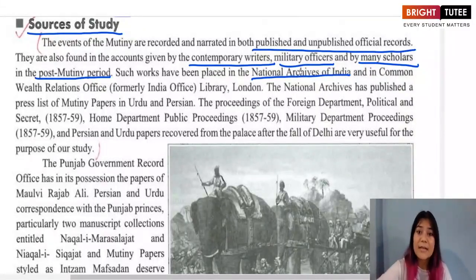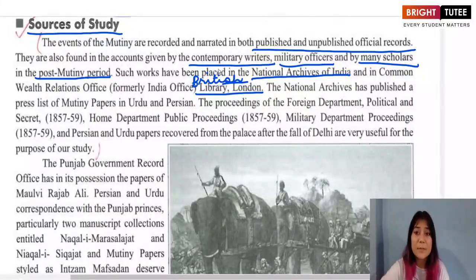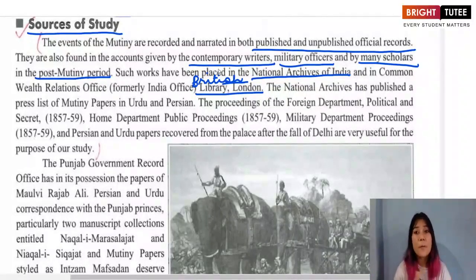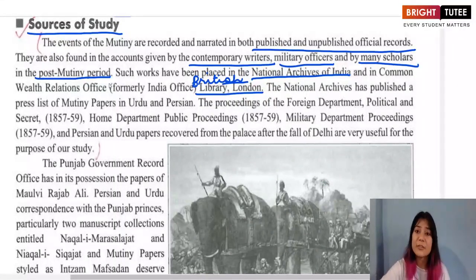Most sources can be found at the National Archives of India in New Delhi and the British Library in London — these are the two most important places. The National Archives of India is a huge building that contains loads of documents, records, files, and registers from the colonial period as well as from periods before and after.